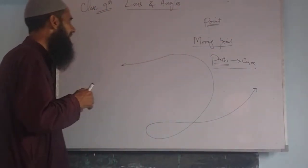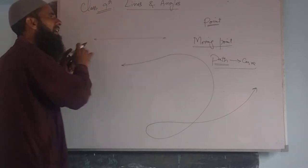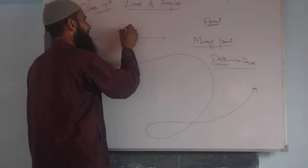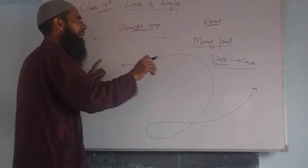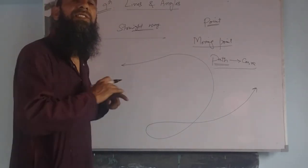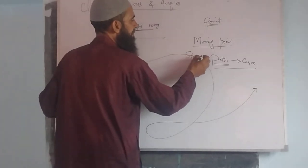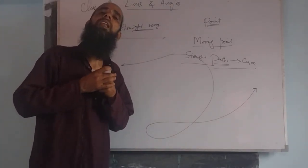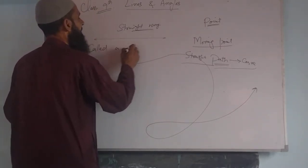A moving point is moving in a straight way. Let us say that the path a moving point is tracing — that path is straight. That is a straight path. When we have a straight path, that straight path is called a line. That is called a line.